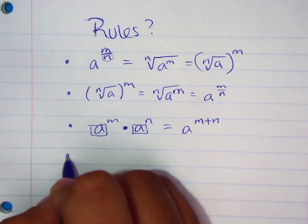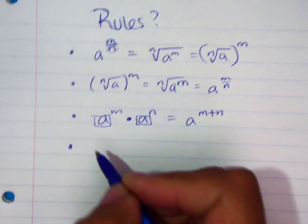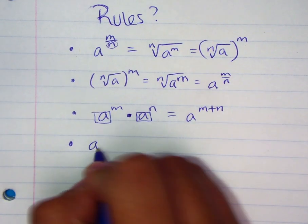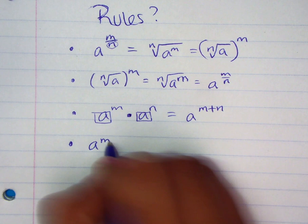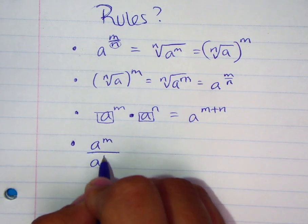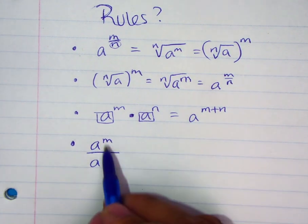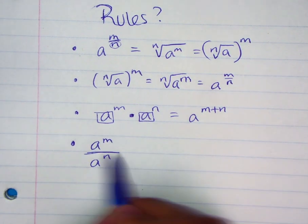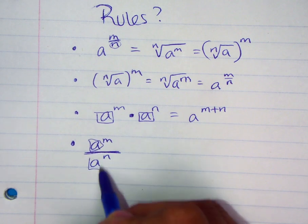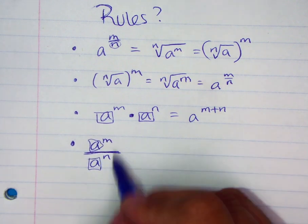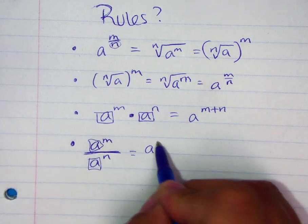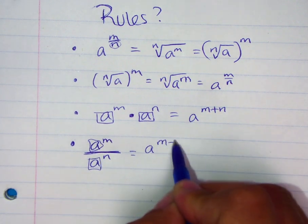Another rule covers what happens if you're dividing instead of multiplying. If you have a base to an exponent and the same base to another exponent and you're dividing, you recognize they share the same base, so you can simply subtract the exponents.